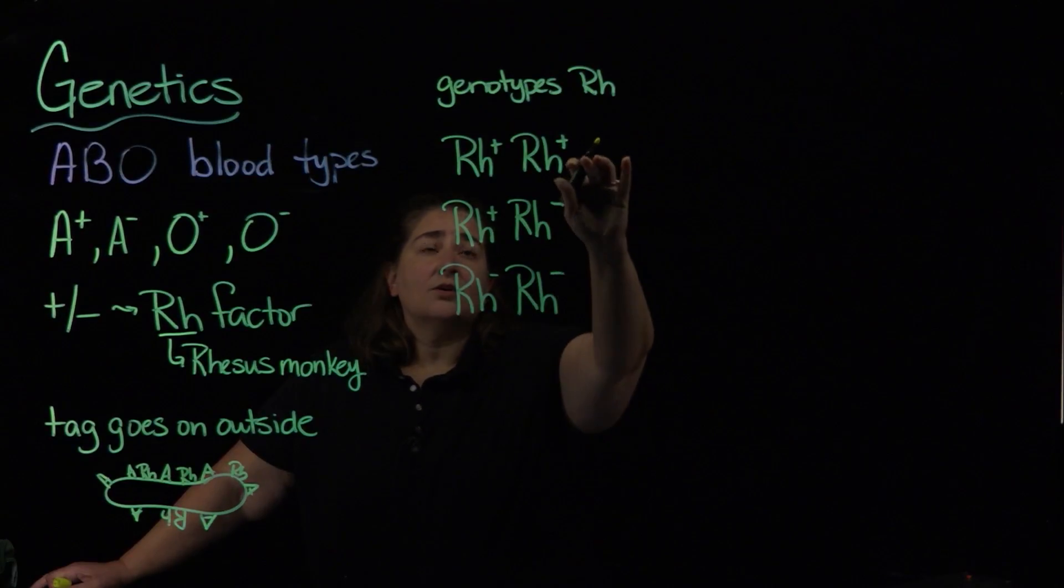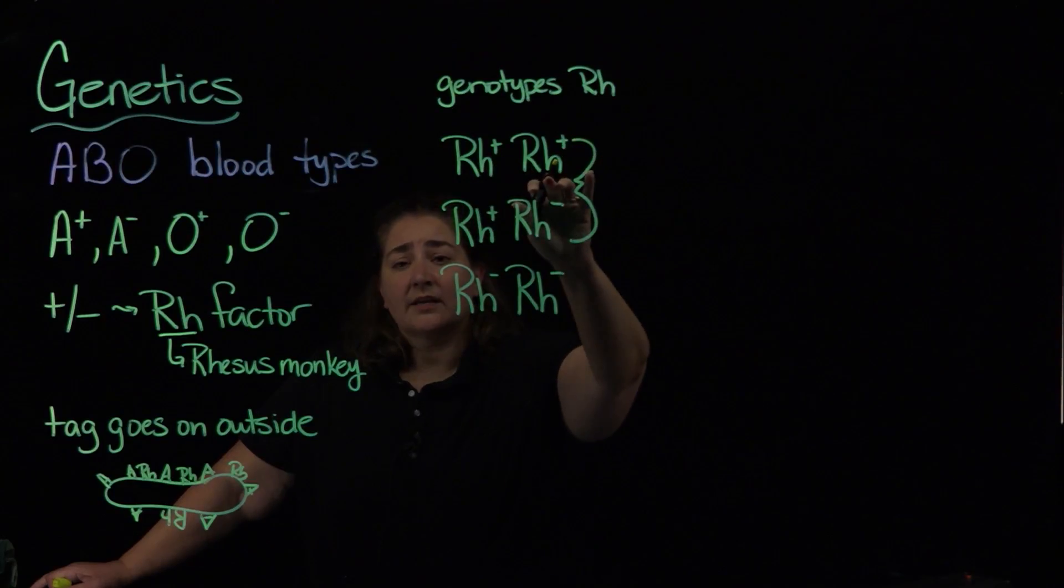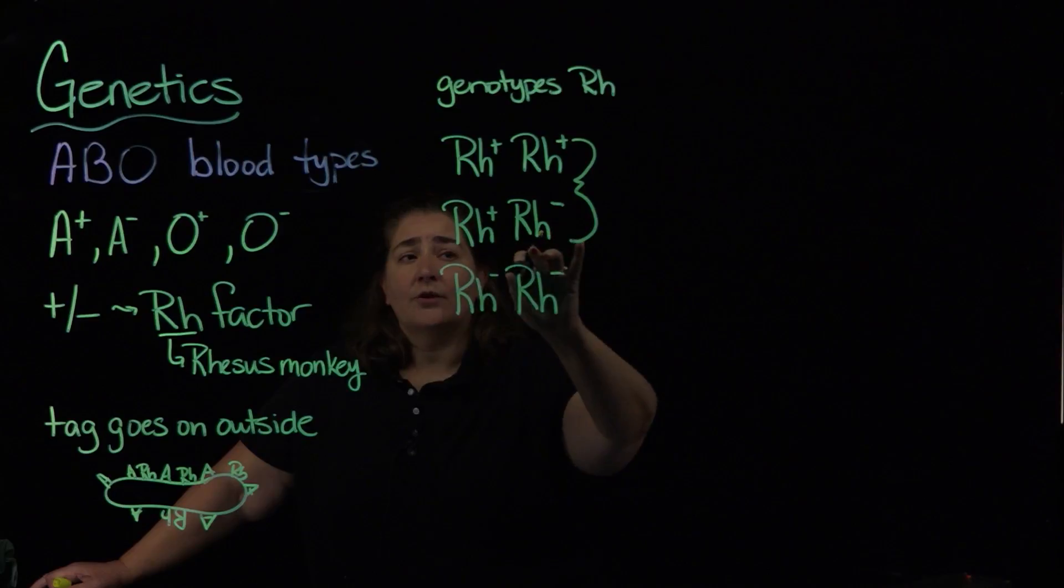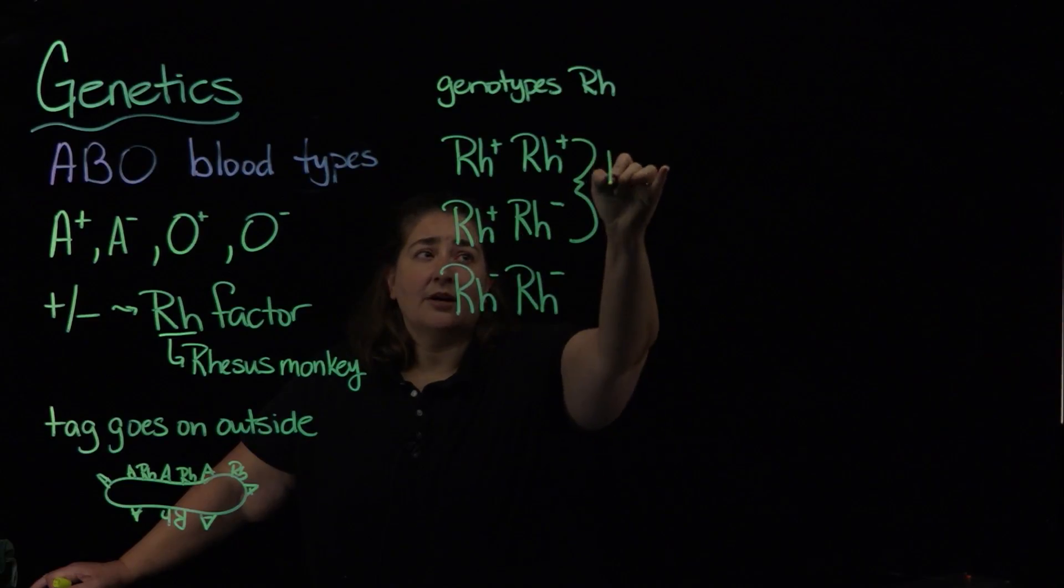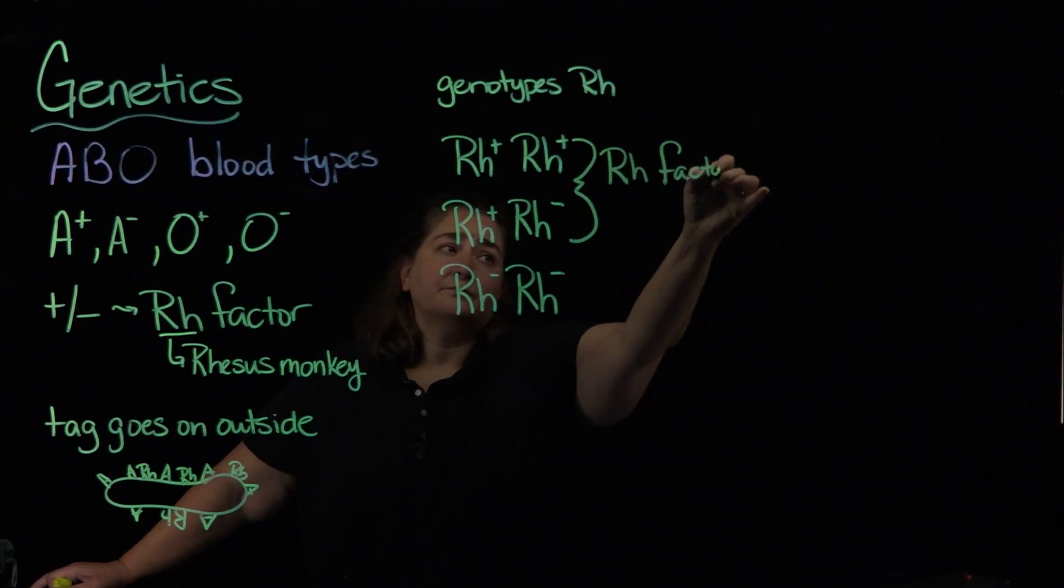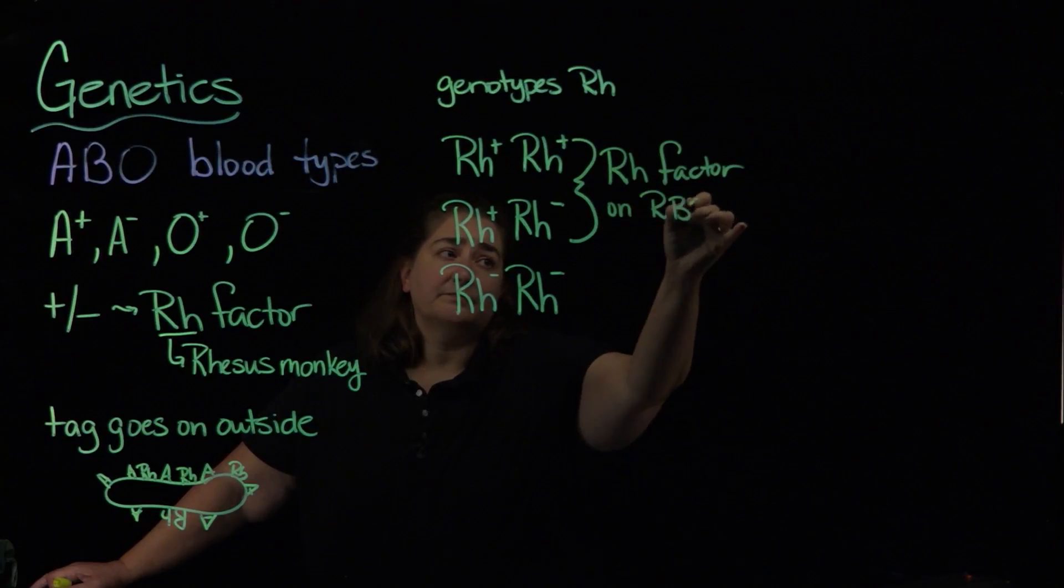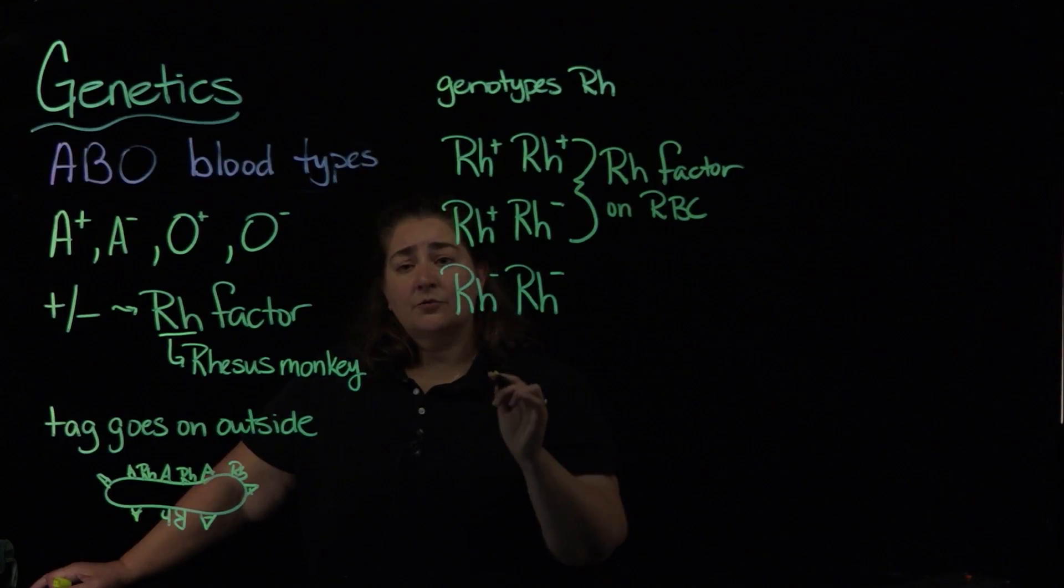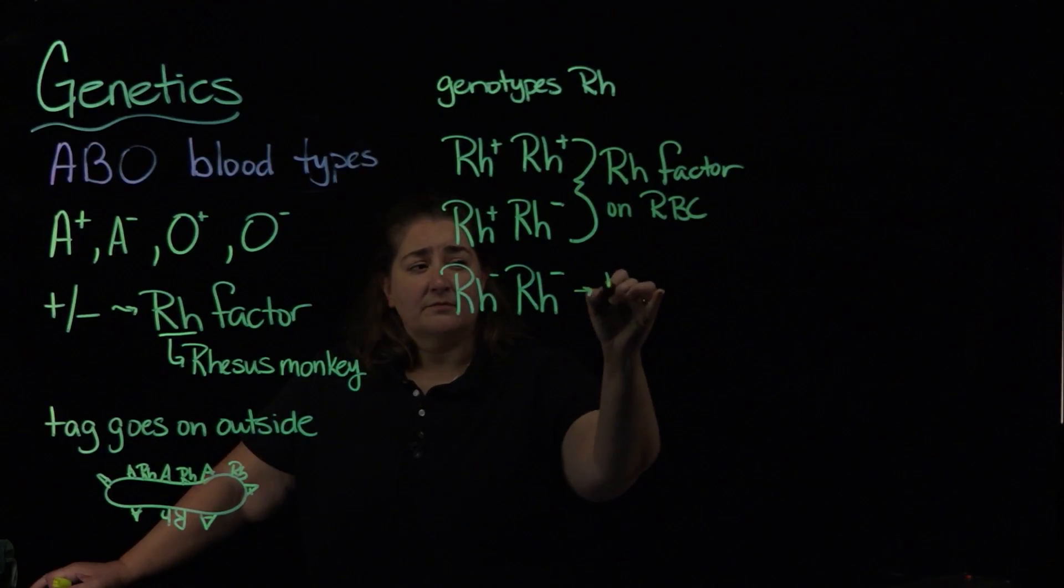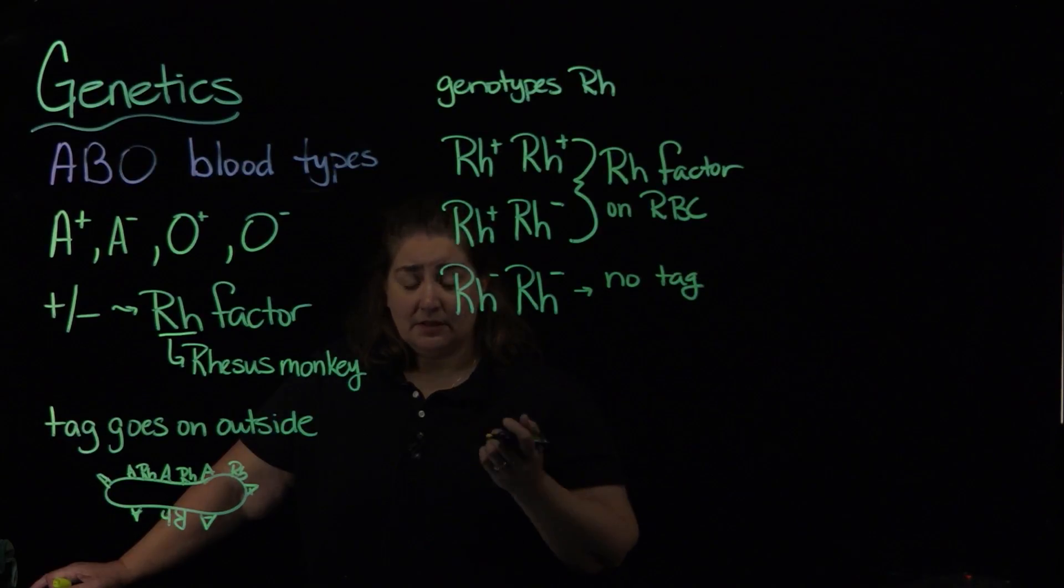So what we're talking about here, both of these, whether it's homozygous dominant or it's heterozygous, you're going to have the Rh factor on the red blood cells. Folks who are Rh negative, they don't have the tag on the outside of the red blood cell.